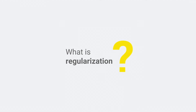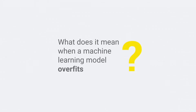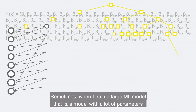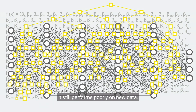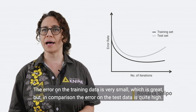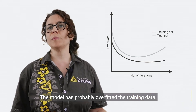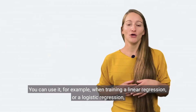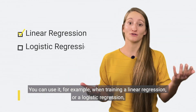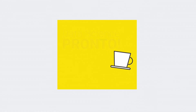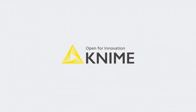What is regularization? Why is partitioning the data so important? What does it mean when a machine learning model overfits the data? Sometimes when training a large model — one with a lot of parameters — it still performs poorly on new data. The error on the training data is very small, but the error on the test data is quite high. The model has probably overfitted the training data. Regularization is a technique to avoid overfitting when training a machine learning model. You can use it when training a linear regression, a logistic regression, or neural networks.